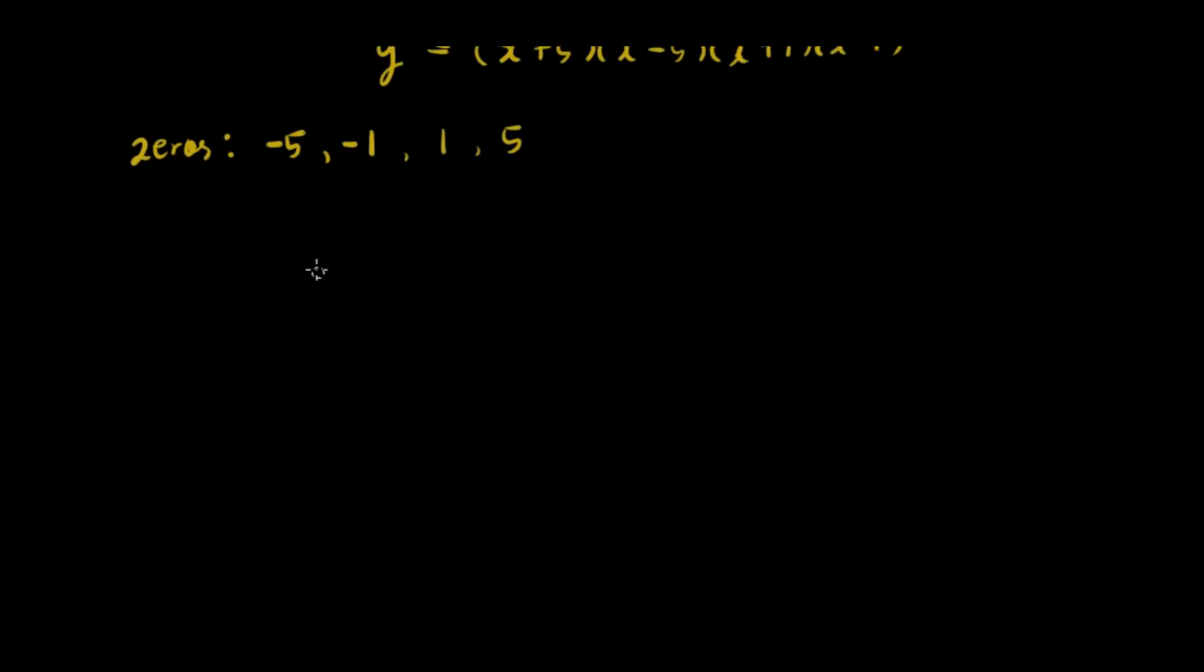I-lera lang natin itong mga zeros natin. So we have negative 5, negative 1, 1, and then 5. And then we will place a line.